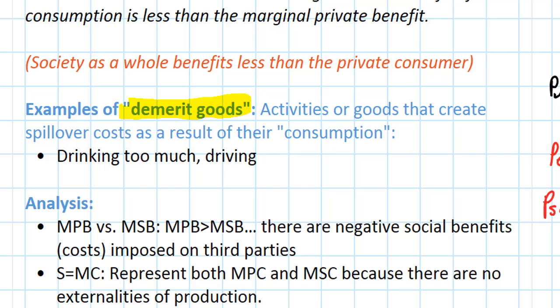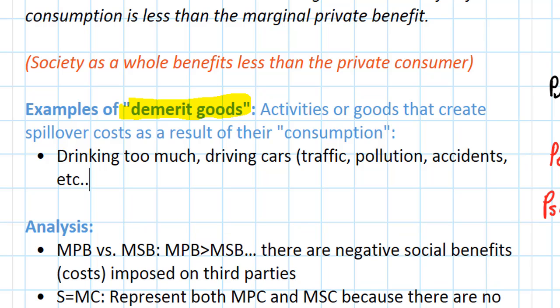Driving itself creates negative costs on third parties in the form of traffic, pollution, accidents, etc. So you could say that driving a private automobile is a demerit good. Cars themselves could be considered demerit goods because too many cars on the road create lots of problems for society as a whole, and not just for drivers but for everybody.